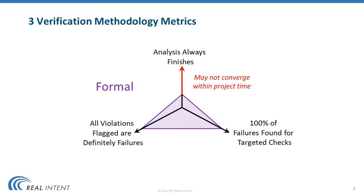Now let's look at the characteristics of formal methods. In formal analysis, if a failure is flagged, it's a definite failure. At the same time, formal analysis is very capable of finding 100% of the failures — that is to say, it is capable of proving correctness. But it lacks on the third dimension, which is the performance dimension, and the formal analysis may not finish in the project timeline. As a result, all the engineering effort goes into figuring out how to improve the completion rate for the formal analysis. This is the weakest dimension for formal analysis.